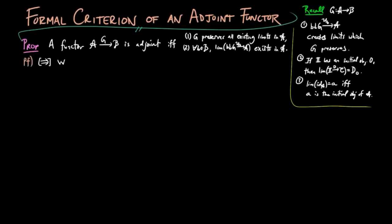For the forward direction, we have shown that adjoints preserve limits and that the object FB eta B is the initial object in the category B over G, where F is the left adjoint to G.